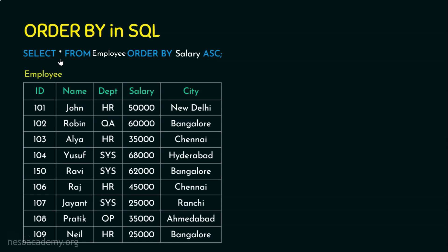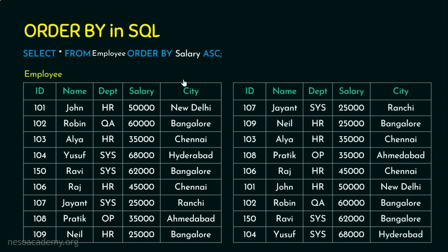Remember, we are retrieving all columns. The output is going to be all columns but sorted by salary in increasing or ascending order. You can see the salary values: the minimum is 25,000, then 35,000, 45,000, 50,000, 60,000, 62,000, and 68,000. The result is sorted in ascending order by the salary column, with 25,000 — the lowest value — appearing first in the result set.